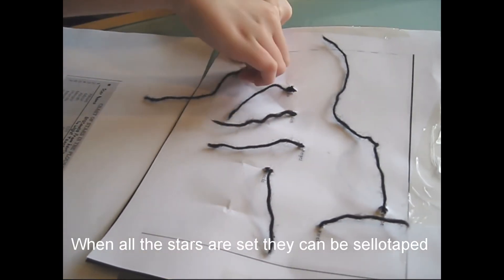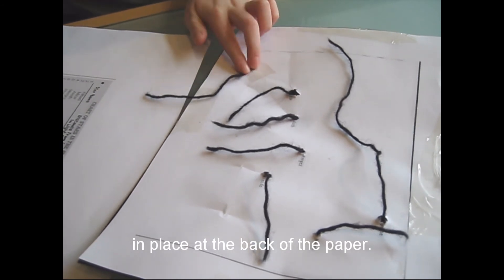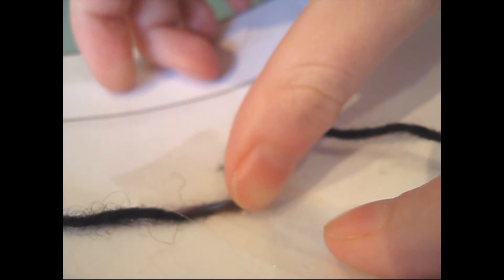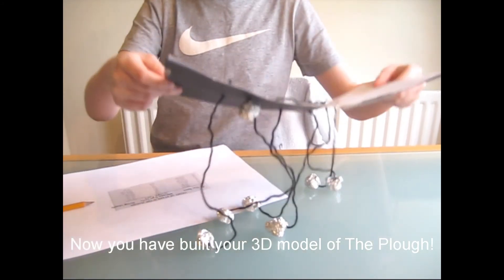When all the stars are set, they can be sellotaped in place at the back of the paper. Now you have built your 3D model of the Plough.